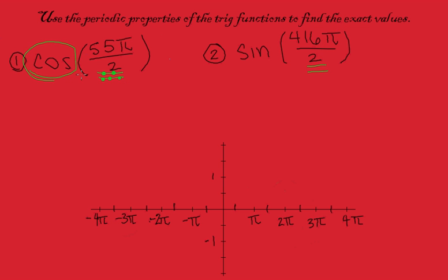If we know about our cosine function, we know that it starts up here at 1, and then it passes through at pi half. So let me graph what this is going to look like. We have a function that goes like this — something like that.